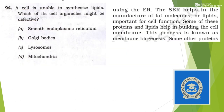Next: a cell is unable to synthesize lipids. Which of its cell organelles might be defective? We need to find which cell organelle helps in synthesis of lipids. The SER — smooth endoplasmic reticulum — helps in the manufacture of fat molecules or lipids. That means if SER is defective, synthesis of lipids is not possible. So the answer is option A — SER, smooth endoplasmic reticulum.